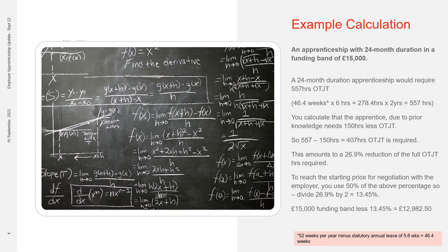To reach the starting price for negotiation with the employer, you use 50% of the above percentage. So you divide 26.9 by 2, which equals 13.45%. A £15,000 funding band less 13.45% equals £12,982.50. That is the starting price for your negotiation. You cannot charge more than that once you have identified prior learning.